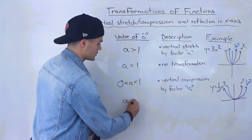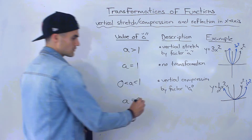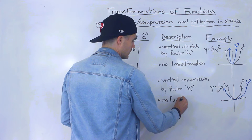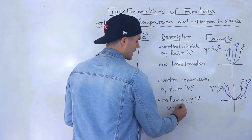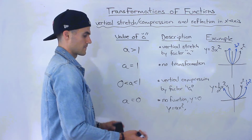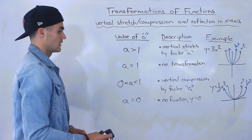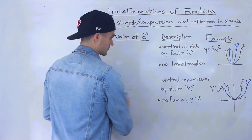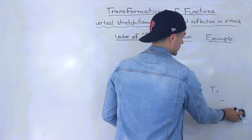If a equals 0, there's no function — we just end up with y equals 0. So if y equals ax squared and a is 0, it collapses to y equals 0. This case usually won't come up. After 0 we move into negative values.